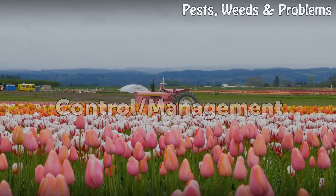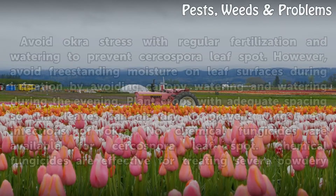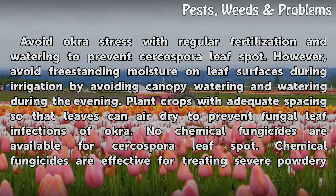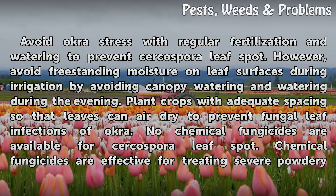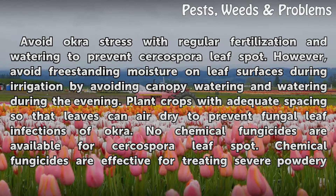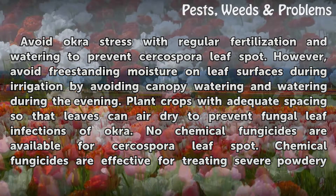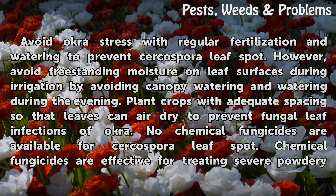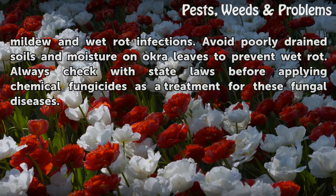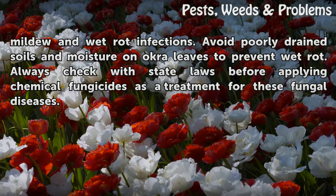Control and Management. Avoid okra stress with regular fertilization and watering to prevent Cercospora leaf spot. However, avoid freestanding moisture on leaf surfaces during irrigation by avoiding canopy watering and watering during the evening. Plant crops with adequate spacing so that leaves can air dry to prevent fungal leaf infections of okra. No chemical fungicides are available for Cercospora leaf spot. Chemical fungicides are effective for treating severe powdery mildew and wet rot infections. Avoid poorly drained soils and moisture on okra leaves to prevent wet rot. Always check with state laws before applying chemical fungicides as a treatment for these fungal diseases.